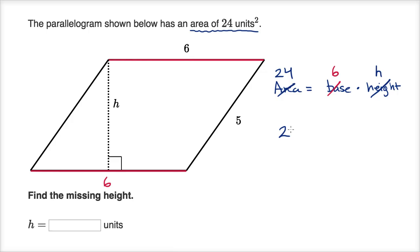So there we go. We have 24 is equal to six times the height.